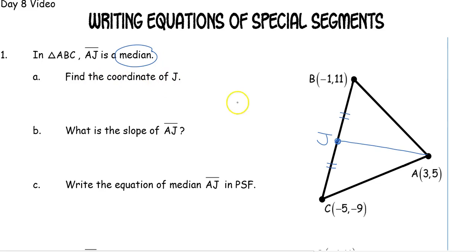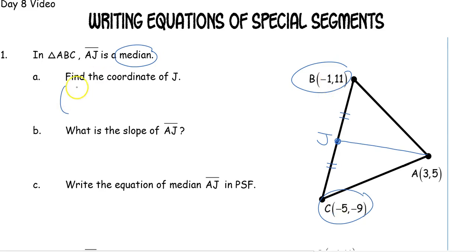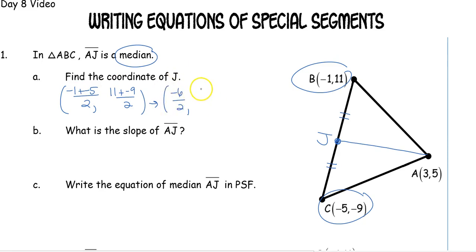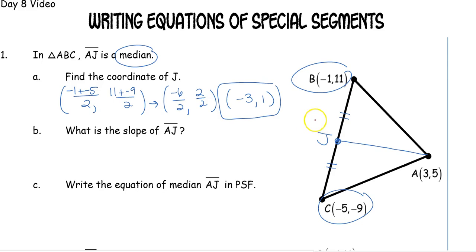To find the coordinates of J, because it's a median we know that J is going to be the midpoint, we use our midpoint formula on segment BC — averaging the X's and averaging the Y's. Our X's are negative 1 and negative 5, which gives us negative 6 divided by 2. The Y's are 11 and negative 9, so 2 divided by 2. The coordinates of J are negative 3, 1.